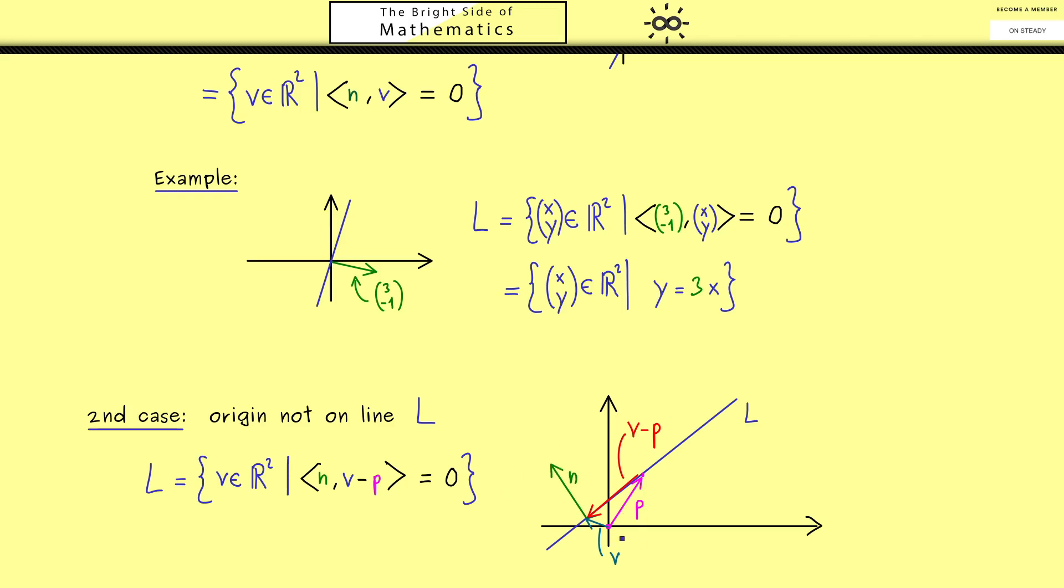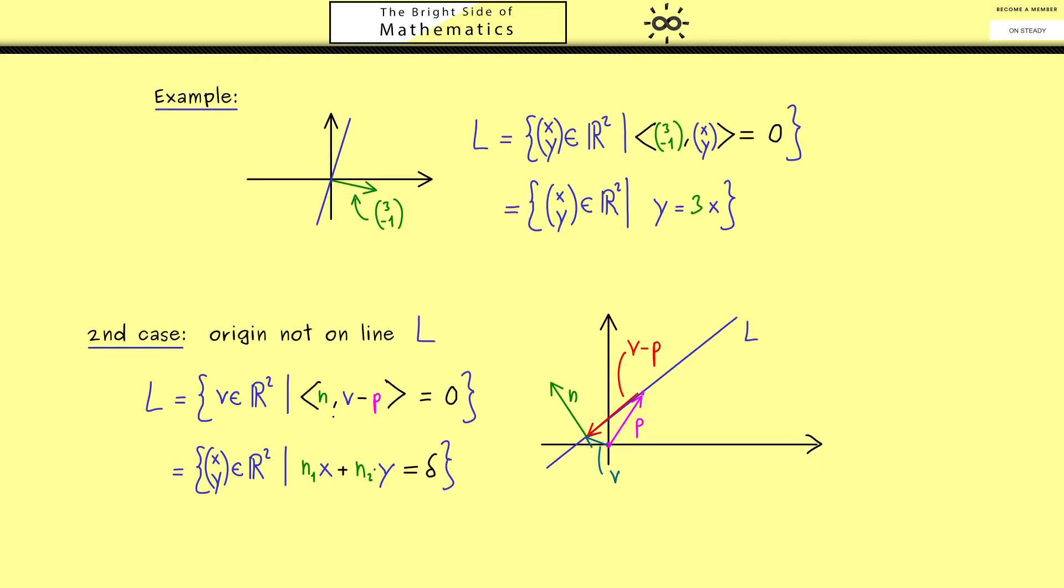However as before we can simplify this even more and maybe we use x and y again. So we have the set of all points x and y in R2. And then when we simplify the inner product we have n1 times x plus n2 times y is equal to a constant we can call delta.